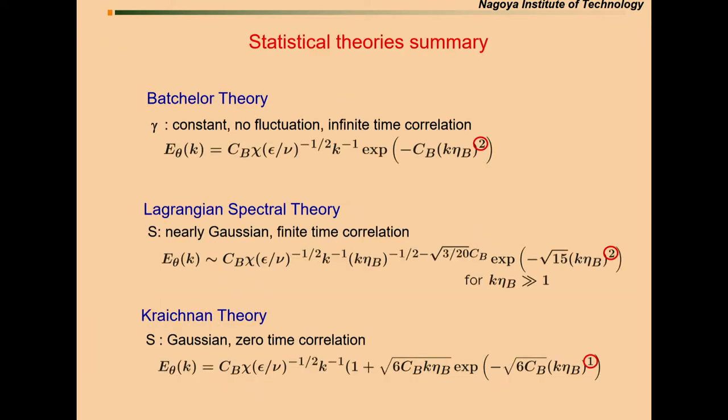This is the summary. The Batchelor theory, it decays Gaussian way. Lagrangian theory predicts Gaussian decay. On the other hand, Kraichnan theory predicts exponential decay. There is some difference in far diffusive range.